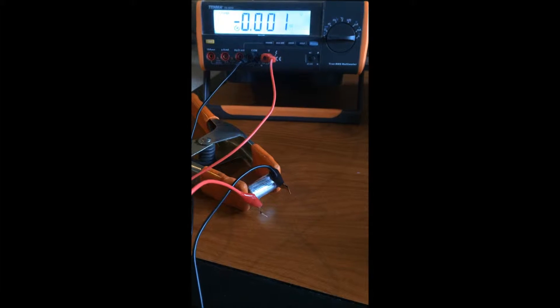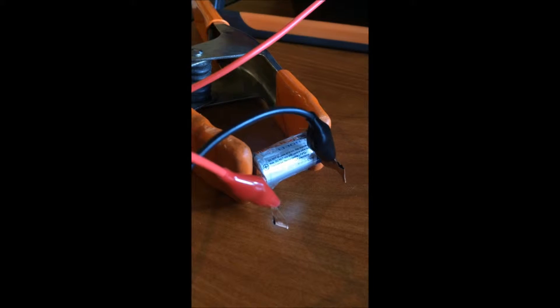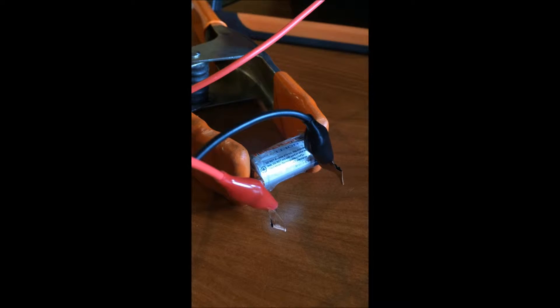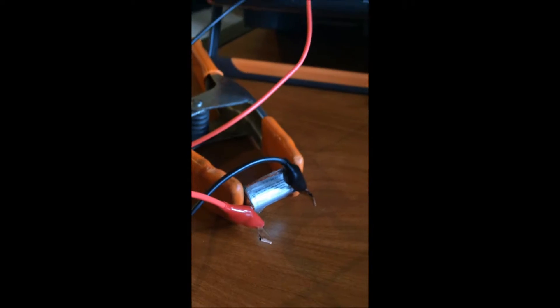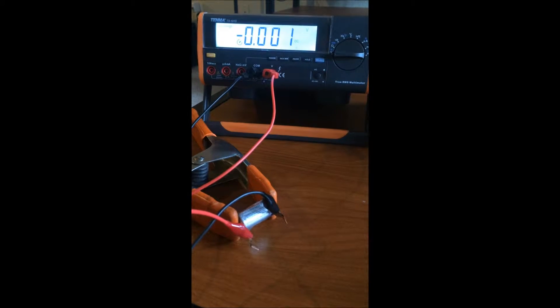All right, so here we have a digital multimeter measuring the voltage across the terminals of the lithium-ion battery. We can see that the battery is fully discharged because it is resting at 0 volts.